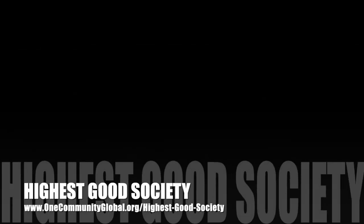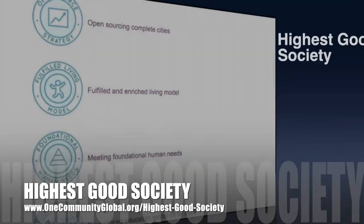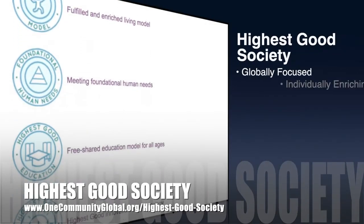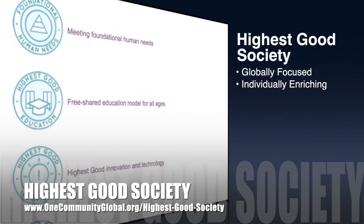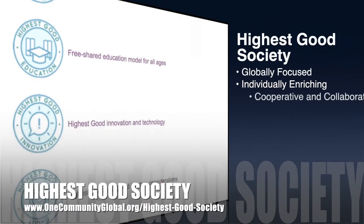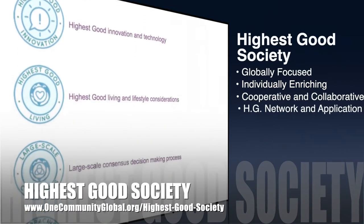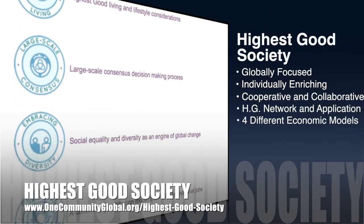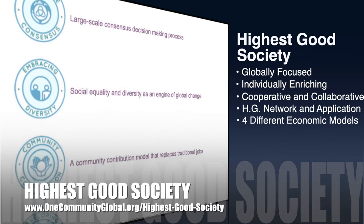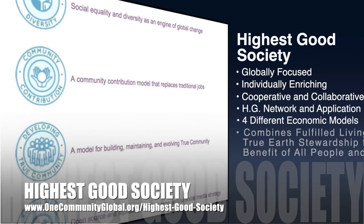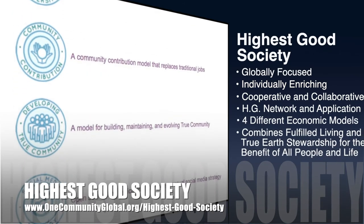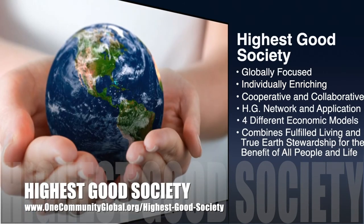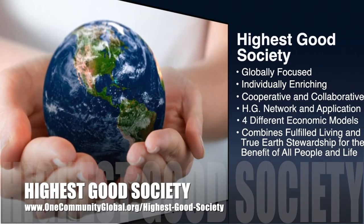The One Community approach to highest good society is globally focused, individually enriching, cooperative and collaborative, includes a highest good network and application, four different economic models, and combines fulfilled living and true earth stewardship for the benefit of all people and all life on this planet.